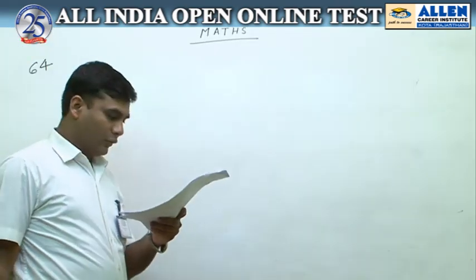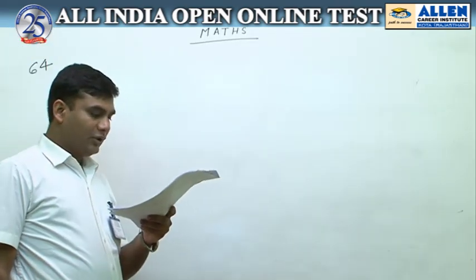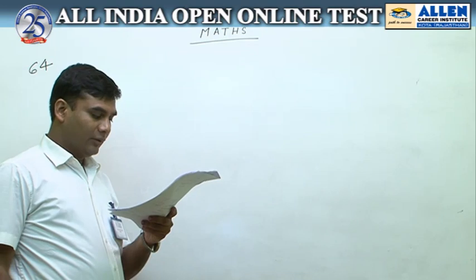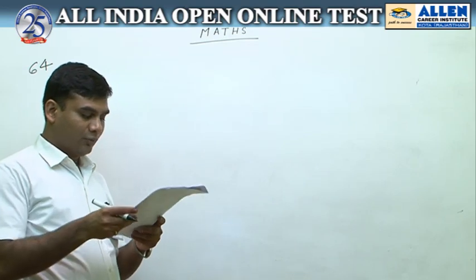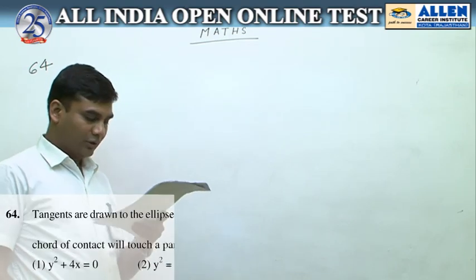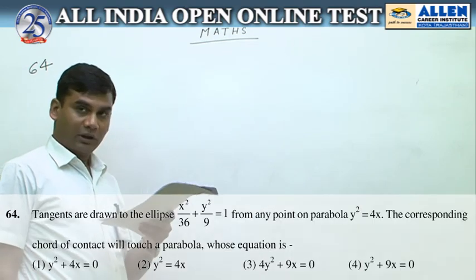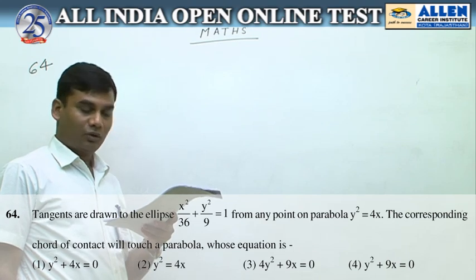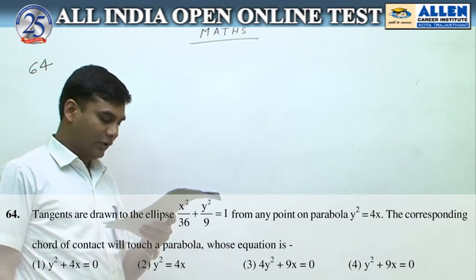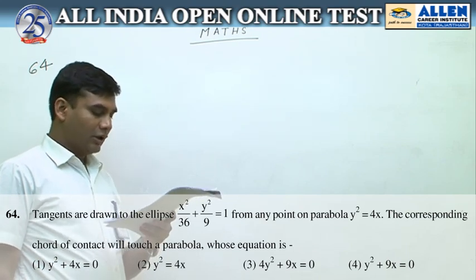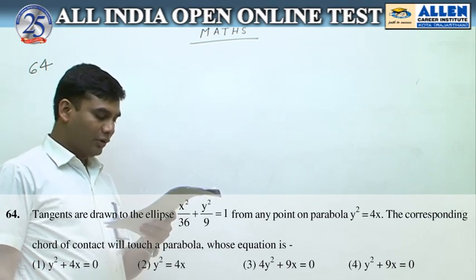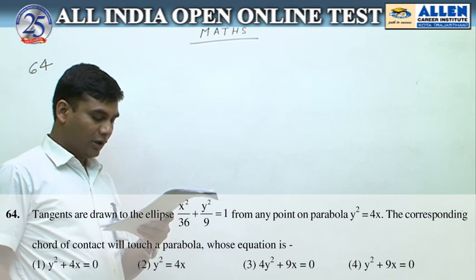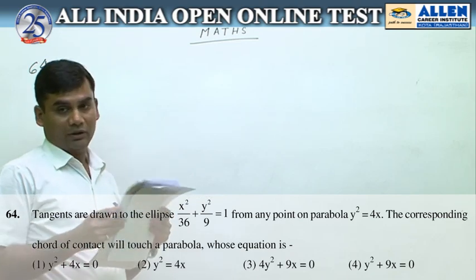Question number 64. Tangents are drawn to the ellipse x squared upon 36 plus y squared upon 9 equals 1 from any point on the parabola y squared equals 4x. The corresponding chord of contact will touch a parabola whose equation is to be found.